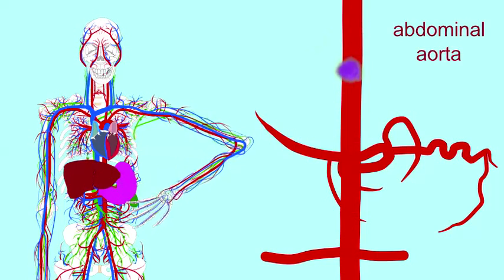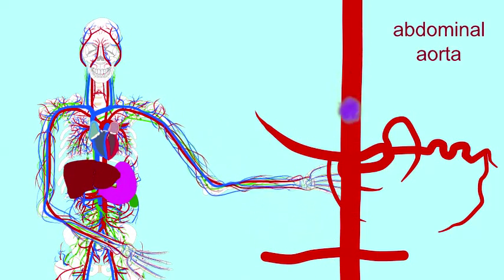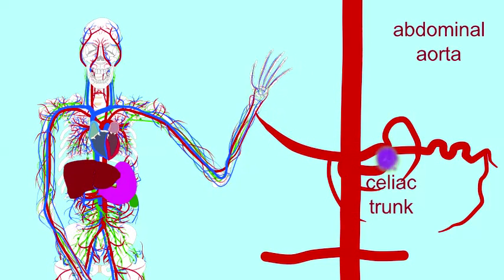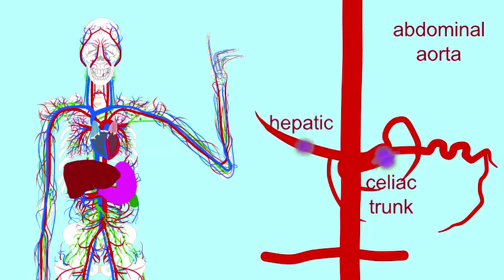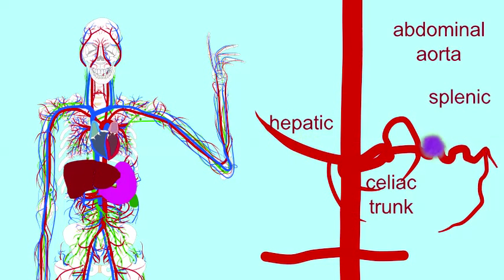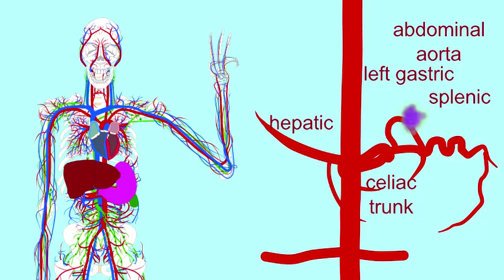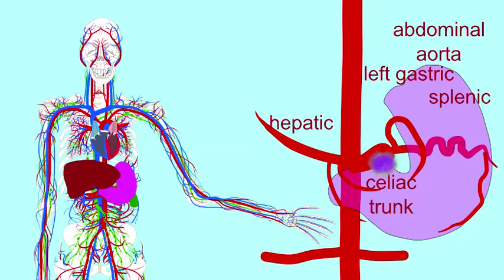In the abdomen, blood would pass from the abdominal aorta into the short celiac trunk, which quickly forms three branches: the hepatic artery headed toward the liver, the splenic artery heading towards the spleen, and the left gastric artery. It turns out that all three of these can send blood to the stomach, except to different regions of the stomach.